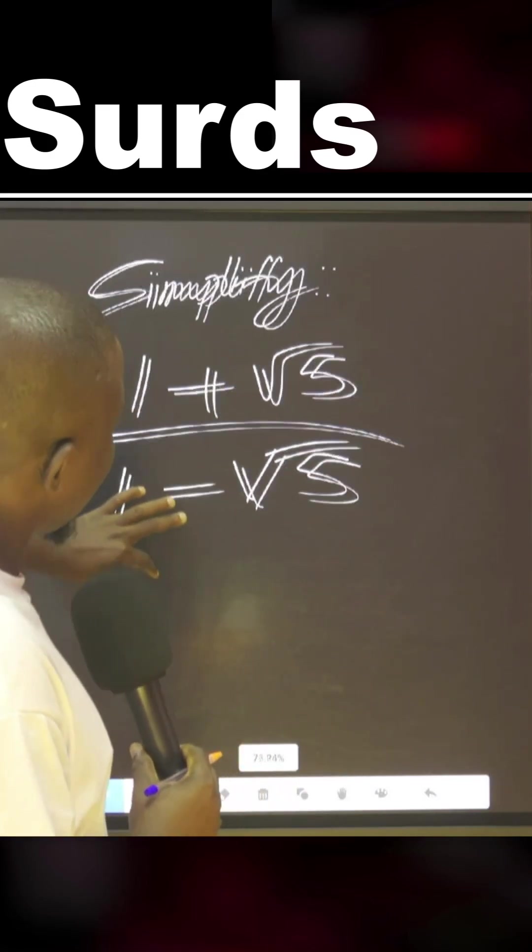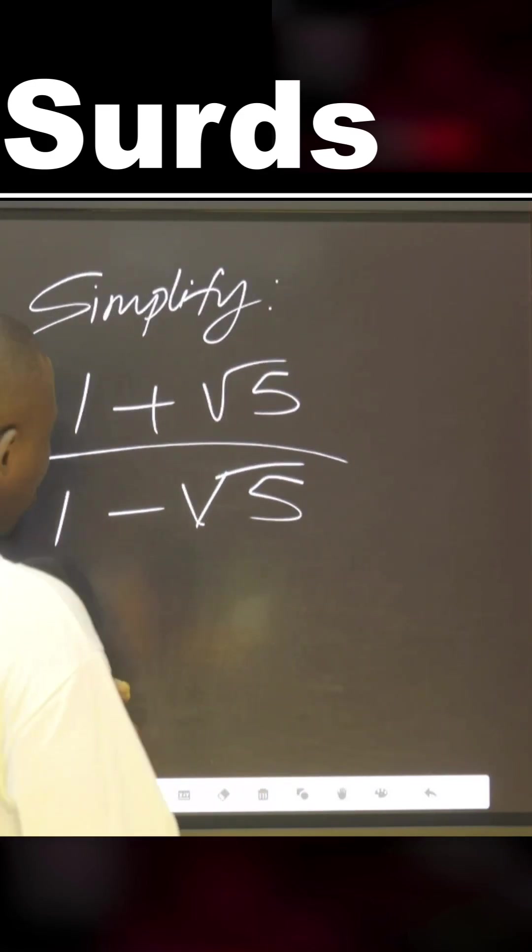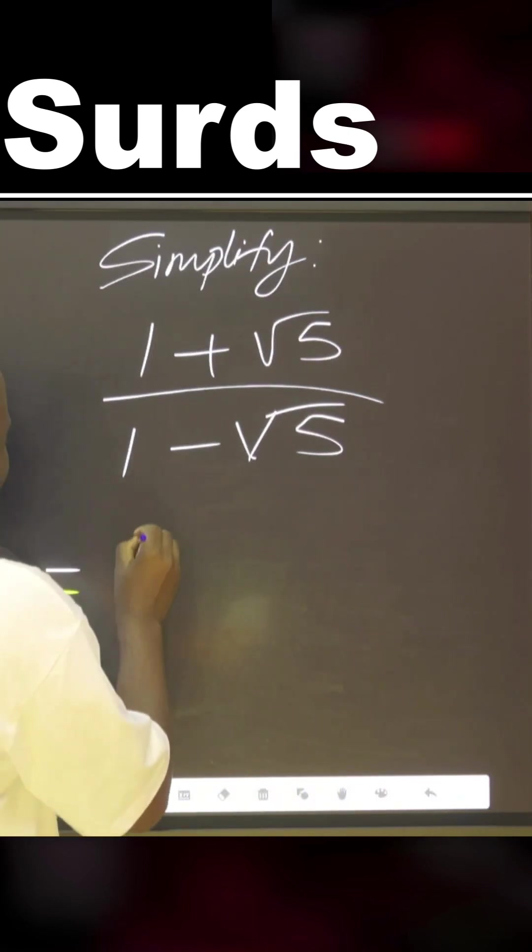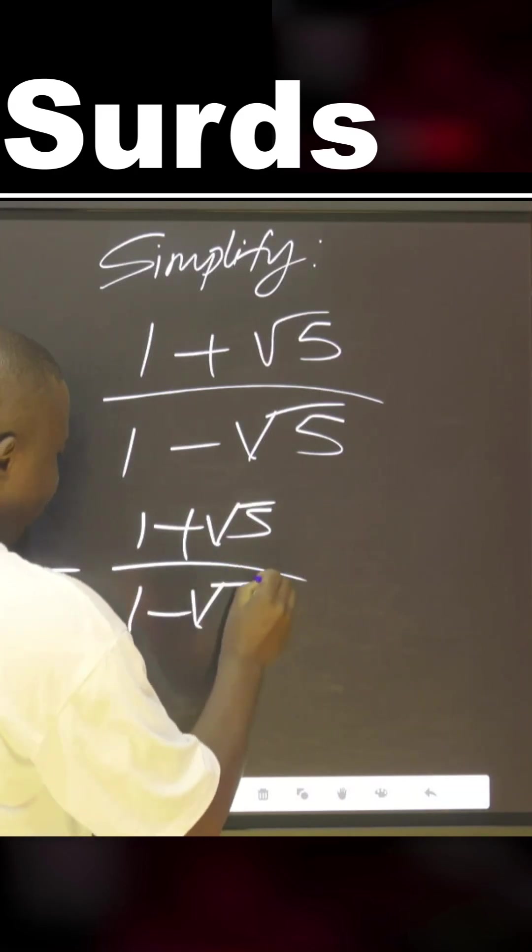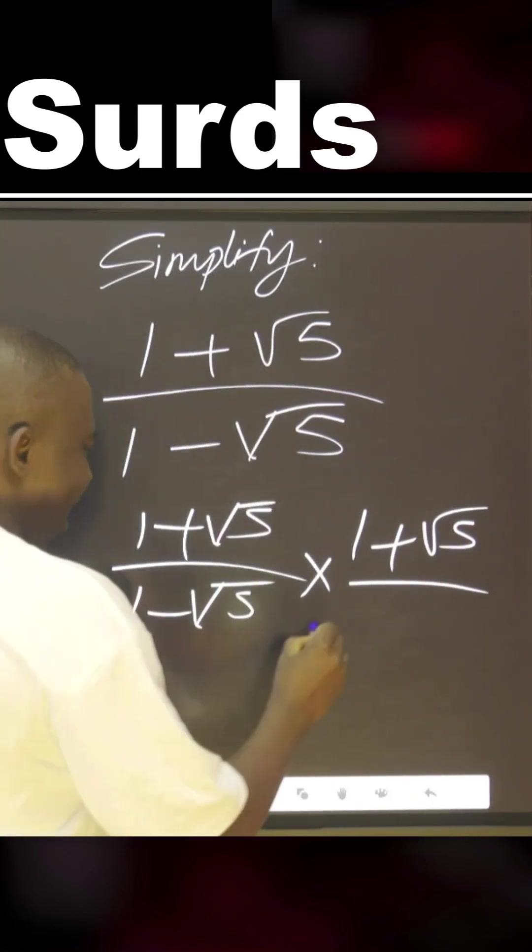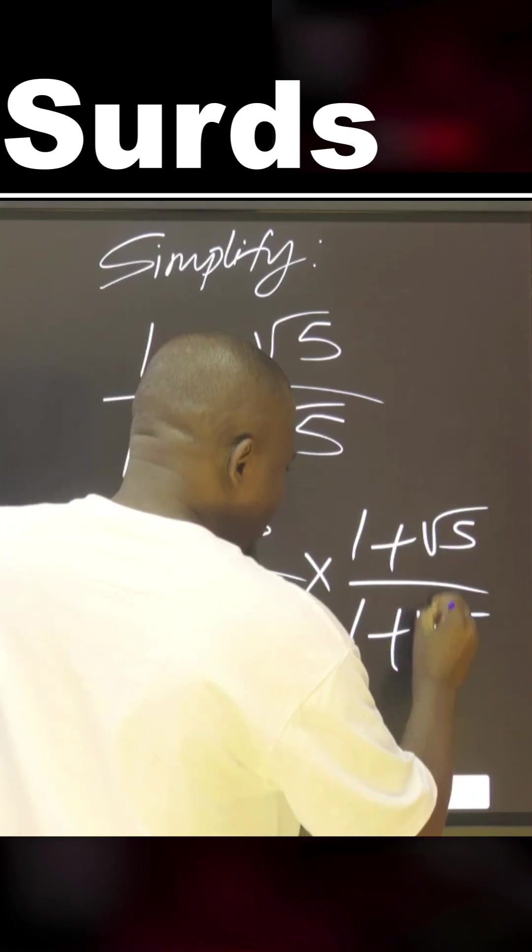Now let's see what you need to do. You simply do equal to one plus square root of five over one minus square root of five, multiply the numerator by the conjugate and the denominator by the conjugate.